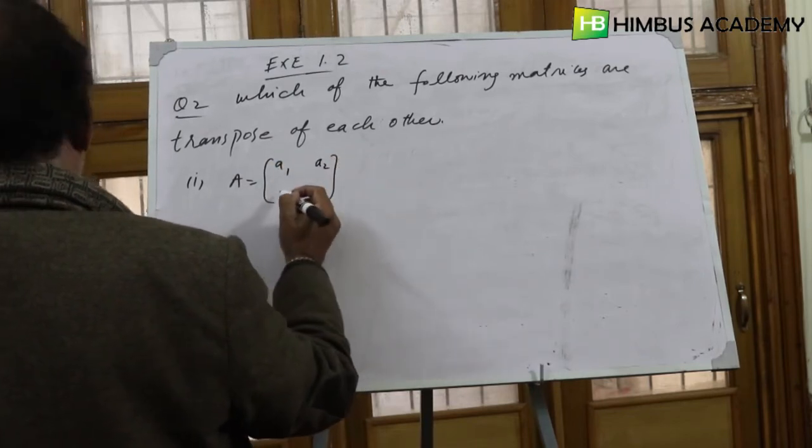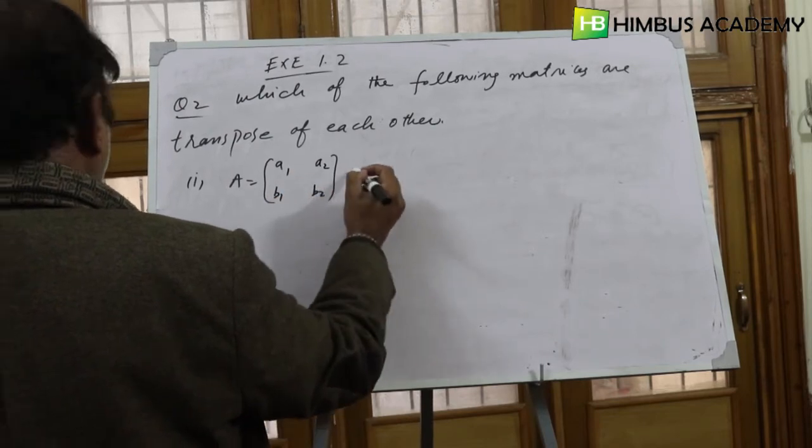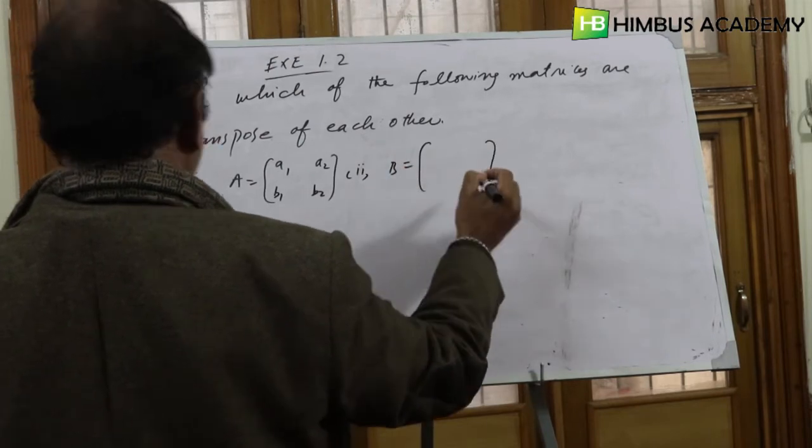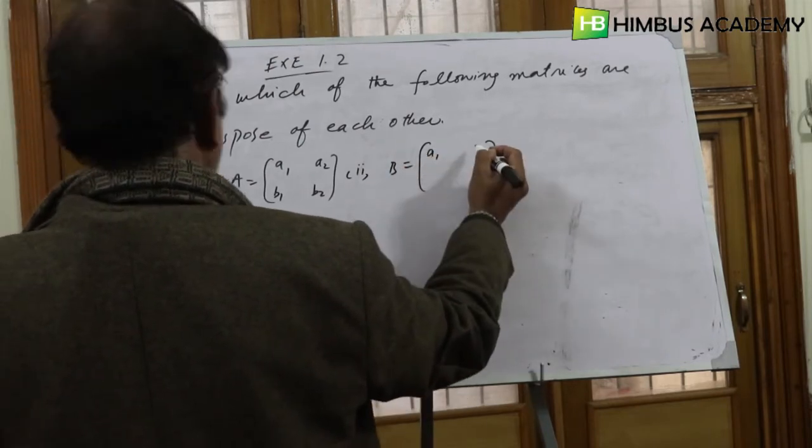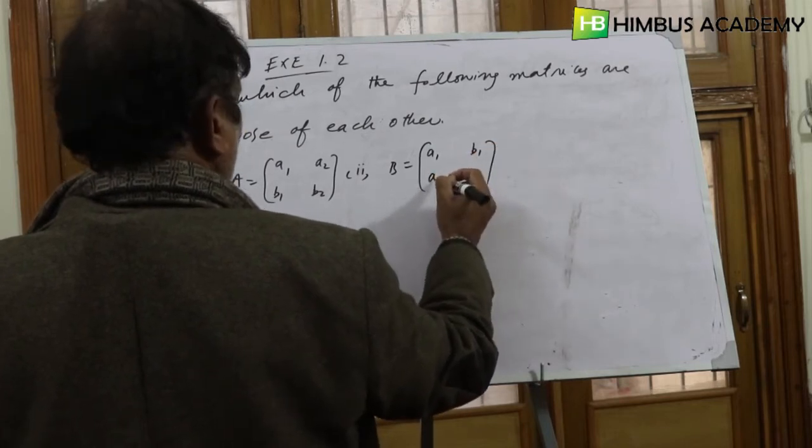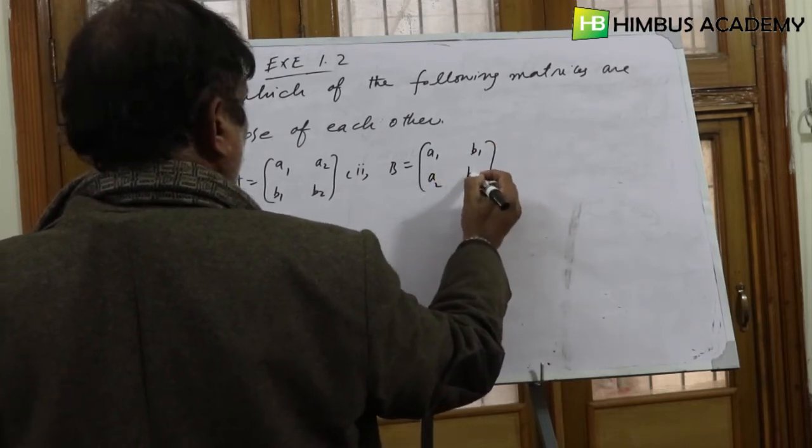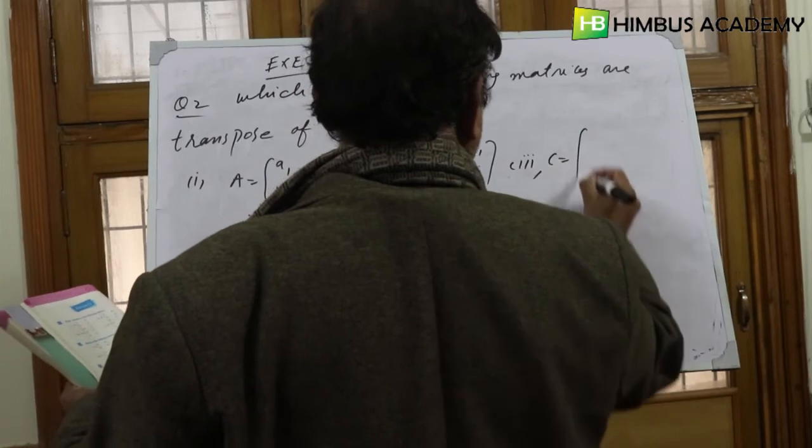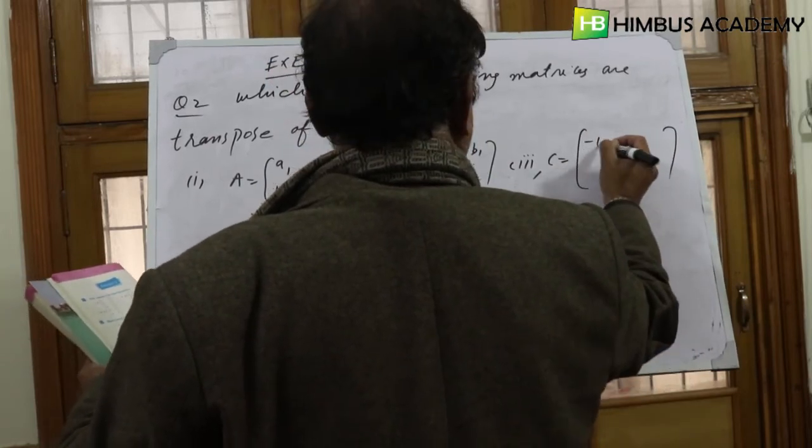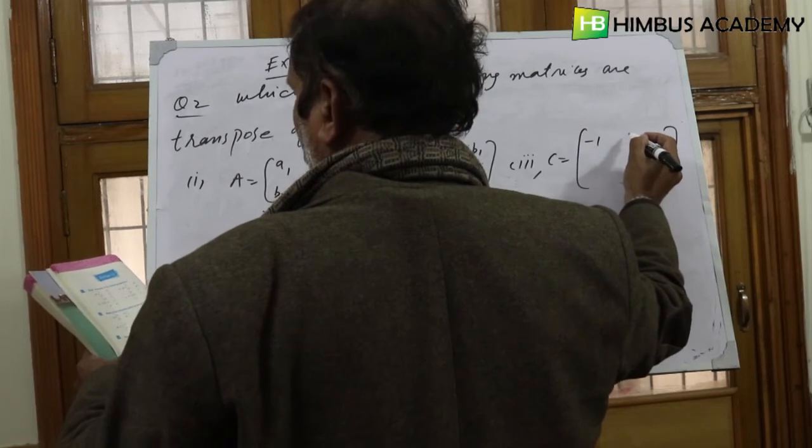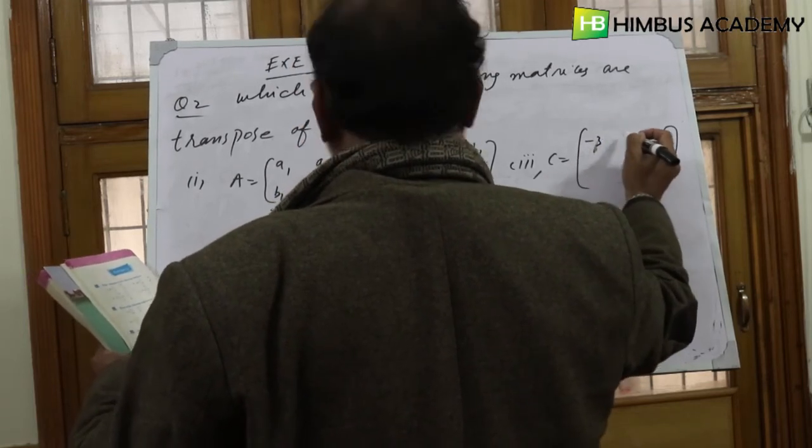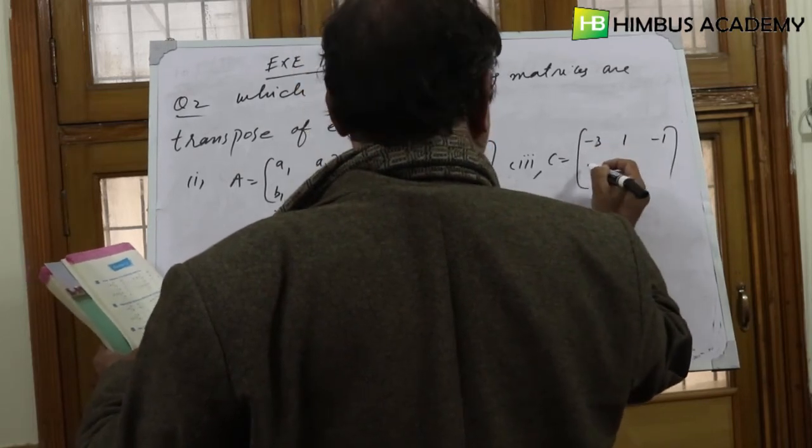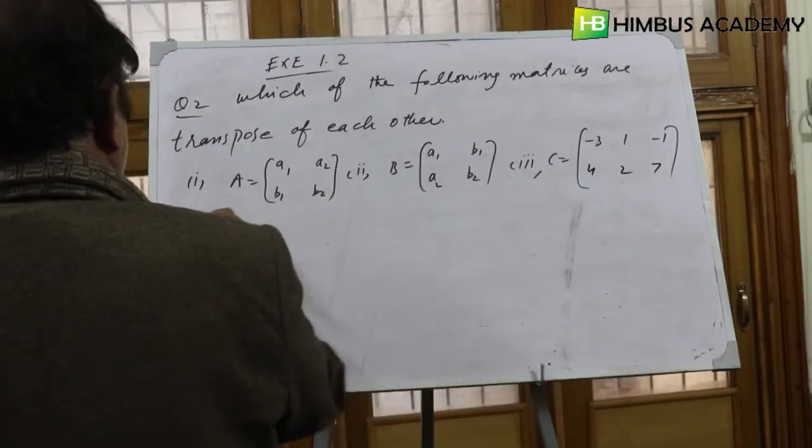Number two: B is equal to [a1, b1; a2, b2]. Number three: C is equal to [-3, 1, -1; 4, 2, 7].